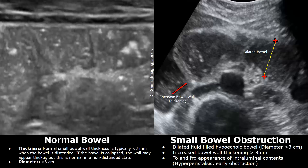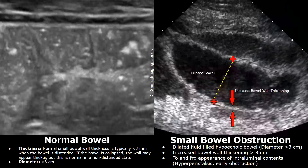Here is another case of small bowel obstruction with a diameter greater than three centimeters. Bowel wall thickening was greater than three millimeters — increased bowel wall thickening can also be seen in some cases. There was a to-and-fro appearance on real-time imaging indicating hyperperistalsis. This is another case with dilated hypoechoic fluid-filled bowel loops, wall thickening greater than three millimeters, and hyperperistalsis indicating early obstruction.